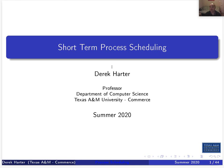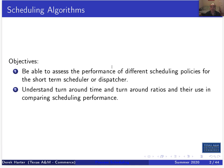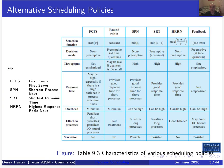Hi, my name is Derek. I'm your instructor for this operating systems class. Today we're going to go over the materials from Unit 5, Chapter 9 of our textbook about short-term process scheduling. Our objectives with this lecture are to assess the performance of different scheduling policies for the short-term scheduler, also known as the dispatcher. We'll use turnaround time, turnaround ratio, wait times, and other performance measures.